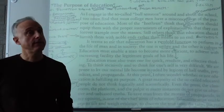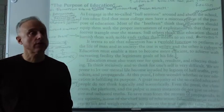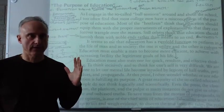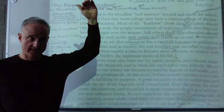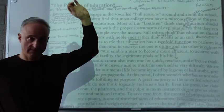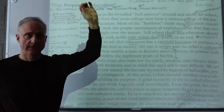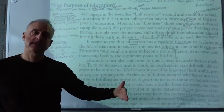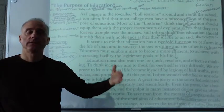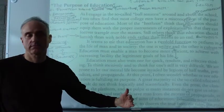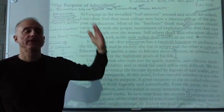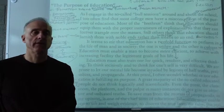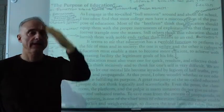You must understand the rhetorical triangle. What is it? It's the author at the apex — the author, the speaker, the creator of the document — at the top. The rhetorical triangle describes the author's relationship to his or her audience on one side, and the author's relationship to the topic or subject on another. You must try to identify who the audience is.